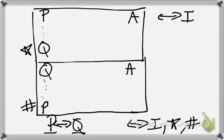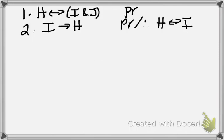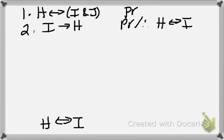Let's see how this works in a proof. Consider the following proof: if H if and only if I and J, and if I then H, therefore H if and only if I. Since our conclusion is a biconditional and it's not a biconditional we have in our premises, we're going to derive this via biconditional introduction.